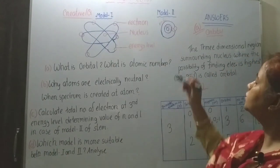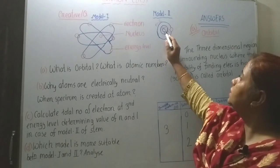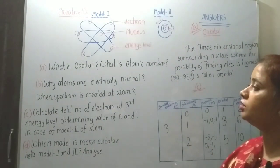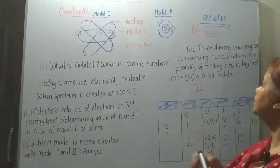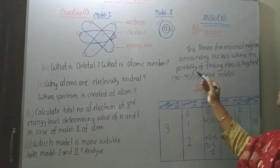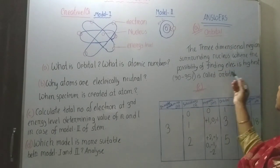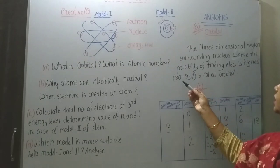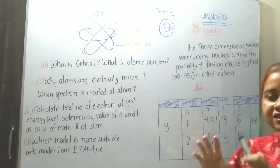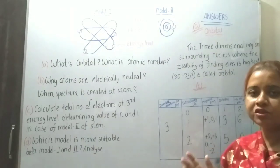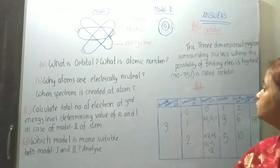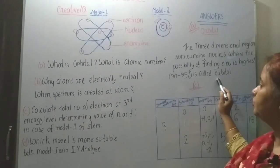Suppose, in case of this figure, this one is nucleus, this one is first orbit, this one is second orbit, like this. But what is orbital? Orbital is the three-dimensional region surrounding the nucleus where the possibility of finding an electron is highest — highest means 90 to 95 percent. This region surrounding the nucleus is called orbital.